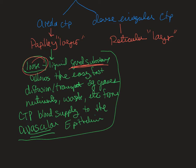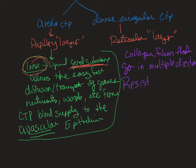In the reticular layer, we're using dense irregular connective tissue. Dense irregular is characterized by those collagen fibers that go in multiple directions. That is the critical, key, important part about the reticular layer and dense irregular — it is going to resist tension in multiple directions.